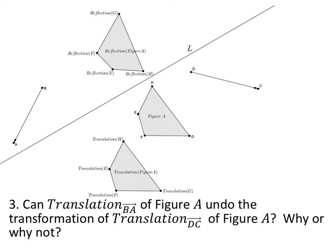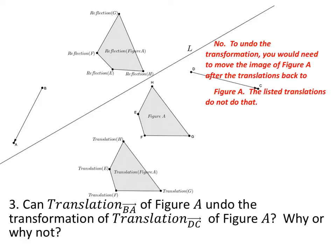So this is asking, if I translate the figure along the line BA, does the vector DC return it to its pre-image? All right, so most of you guys know this. The answer, of course, is no. The vector DC would not return figure A back to its pre-image from a translation along the vector AB. We would have to move it back along the vector AB instead of BA for that one.